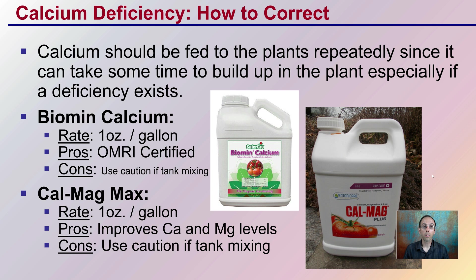So how do we correct this problem? Calcium should be fed to the plants repeatedly, since it does take time to build up, especially if a deficiency exists. Here are two products: one is called Biomin Calcium, and the other is CalMag Max. Biomin starts usually at an ounce per gallon and can be applied to the leaves and as a drench; it's OMRI certified. Use caution when tank mixing as it may not get along with other nutrients, so it's typically applied alone. CalMag Max follows the same basic dilution rates; it's not OMRI certified, but it does improve calcium and magnesium levels. As always, use caution when tank mixing to avoid unwanted interactions. Feeding these consistently on a repeated schedule will help reduce the chance of ever seeing a calcium deficiency.